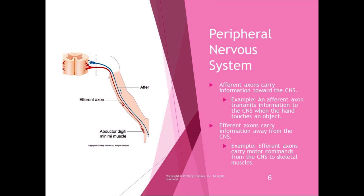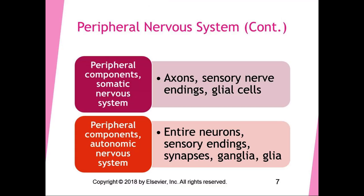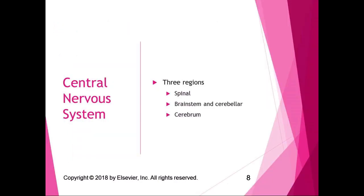The peripheral nervous system carries information either toward or away from the central nervous system. The peripheral nervous system components include the somatic nervous system and the autonomic nervous system, and we will talk about each of those individually in their own chapters. The central nervous system has three regions: the spinal system, brainstem and cerebellar region, and the cerebrum. The fourth region we'll talk about is the peripheral region.